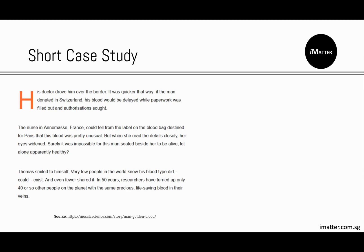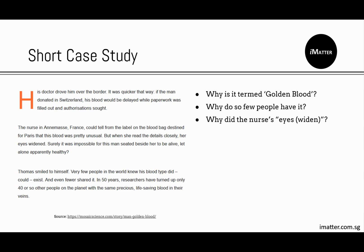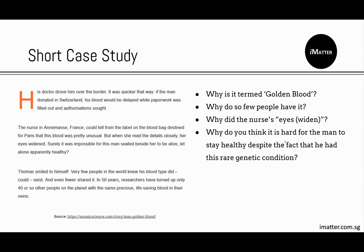So upon reading this article, there are a few questions to be asked: Why is it termed golden blood? Why do so few people have it? Why did the nurse's eyes widen? And lastly, why do you think it is hard for the man to stay healthy despite the fact that he had this very rare genetic condition? It is a very good habit and it is always important to ask questions when dealing with something you are unfamiliar or unsure about.